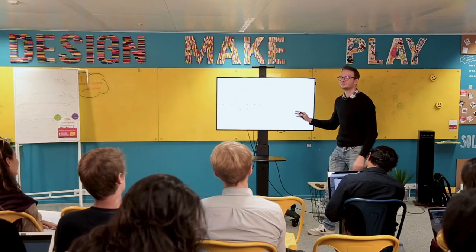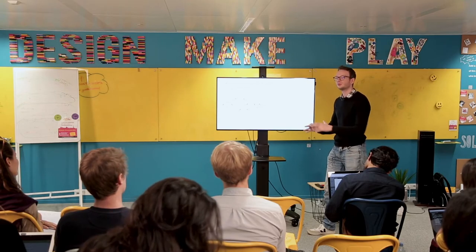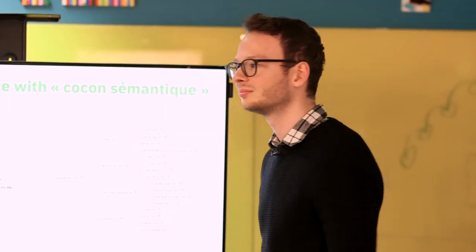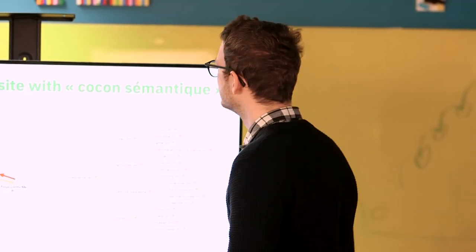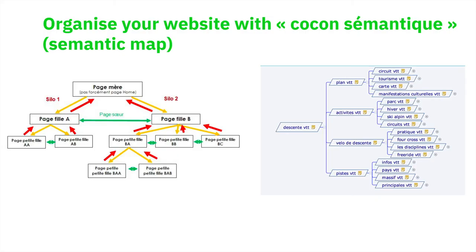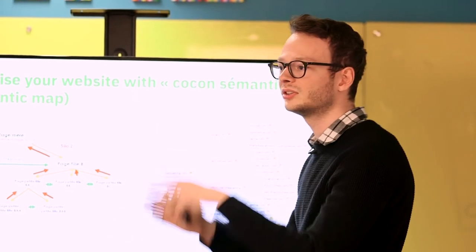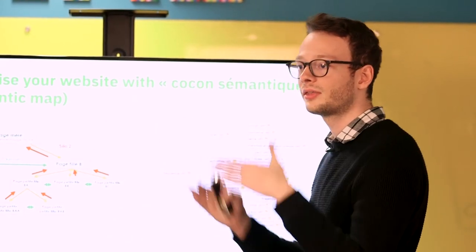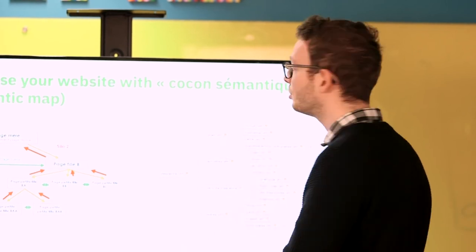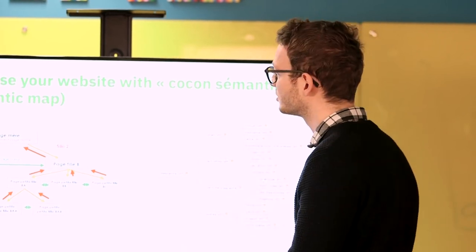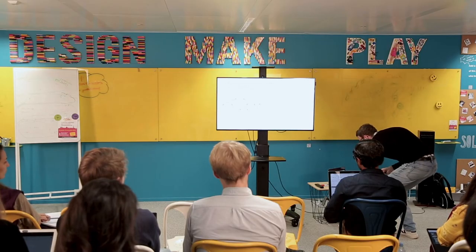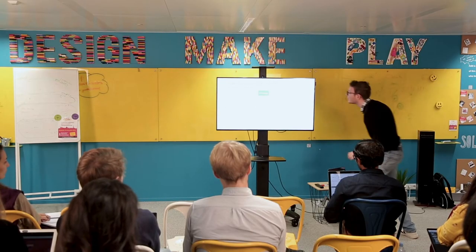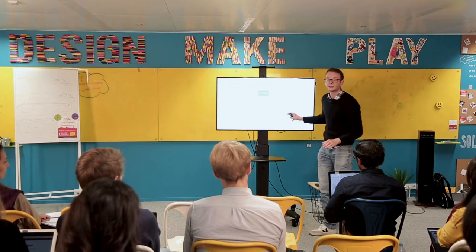The idea is to structure your website through what we call cocon semantics. You should structure your website through different semantic themes that are important for your business. If we take our example, it will look like this.